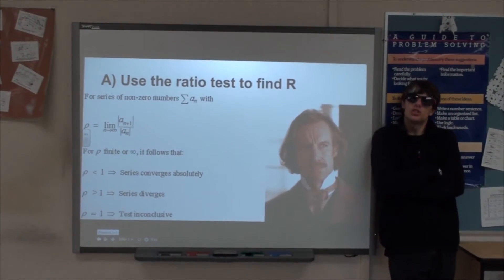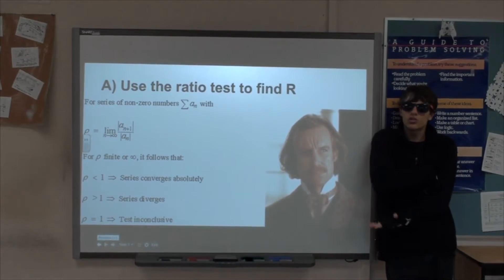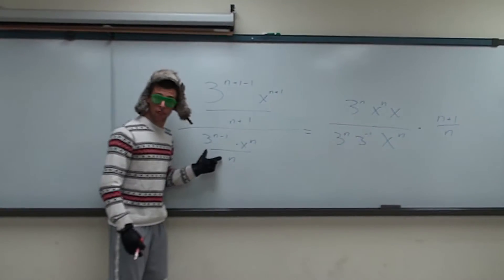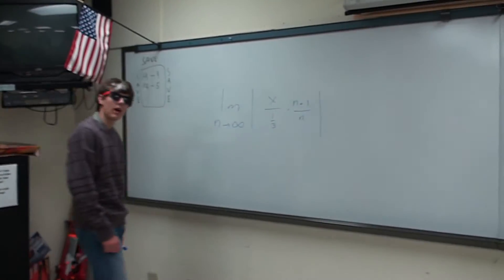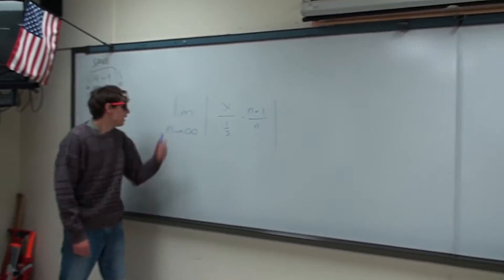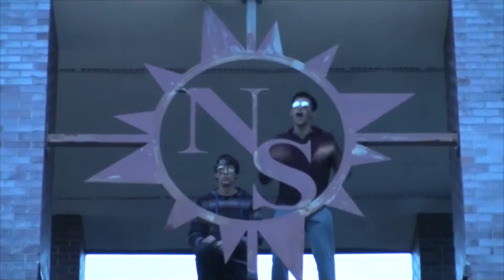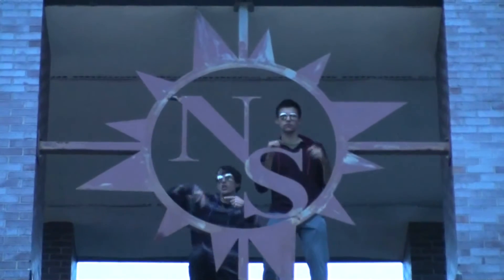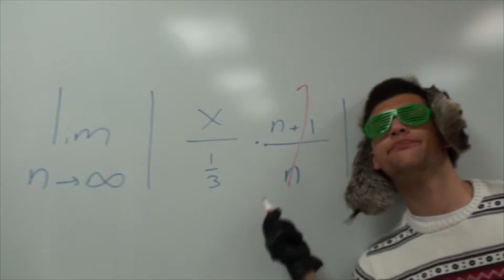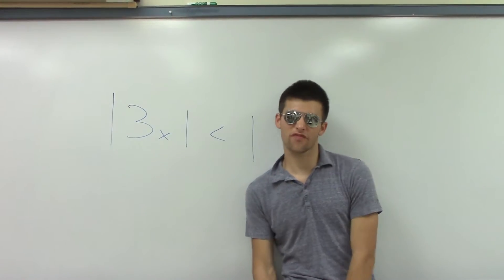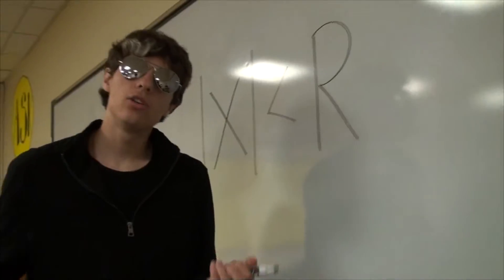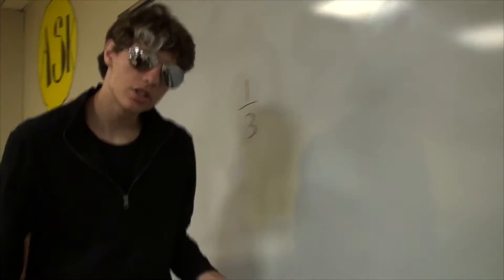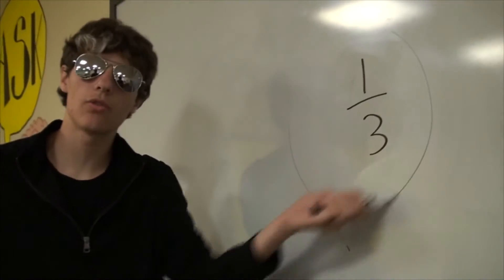Use the ratio test to find r! Just use the ratio test and they'll think you're smart! Term n+1 on the top and term n on the bottom. After you cancel out like terms, you basically got em. Now take the absolute value of the ratio, limit as n goes to infinity. N in the top and n plus 1 in the denominator — they're both infinity, so they cancel out. Absolute value of 3x is less than 1. Divide both sides by 3 and then you're pretty much done. Now you've got it in the form absolute value of x is less than r. So logically we can conclude that 1/3 is our final answer.